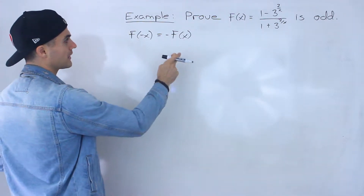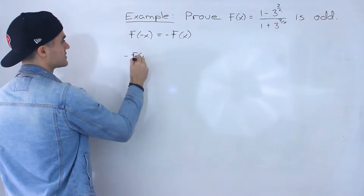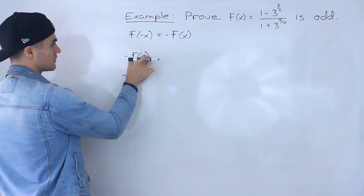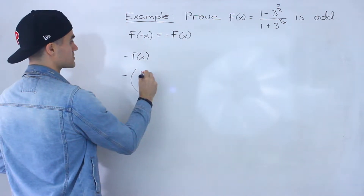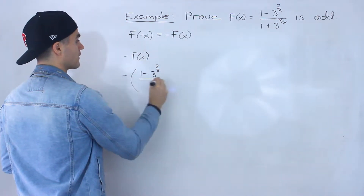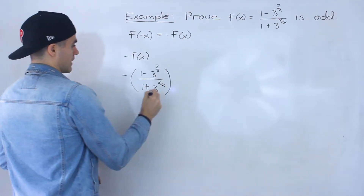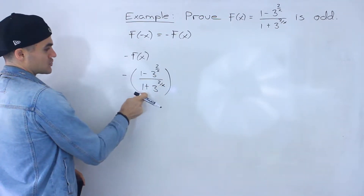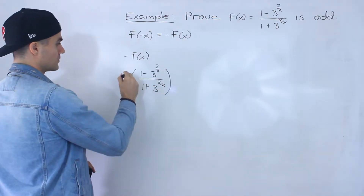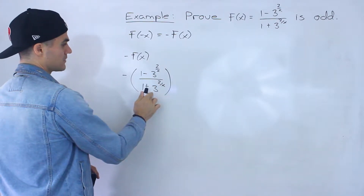First, I'm going to get an expression for -f(x) — I feel like that's easier to do. So for -f(x), f(x) is all of that, so we just rewrite that function in the bracket. Then this negative here — you can distribute it to either the denominator or the numerator, but not both. I'm going to distribute it to the numerator just because all the signs there are positive.